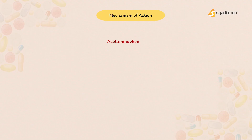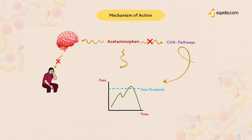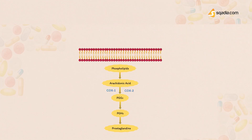The exact mechanism of action of acetaminophen has not been fully established. Despite this, it is often categorized alongside NSAIDs due to its ability to inhibit the cyclooxygenase, or COX, pathways. It is thought to exert central actions that ultimately lead to the alleviation of pain symptoms. One theory is that acetaminophen increases the pain threshold by inhibiting COX.